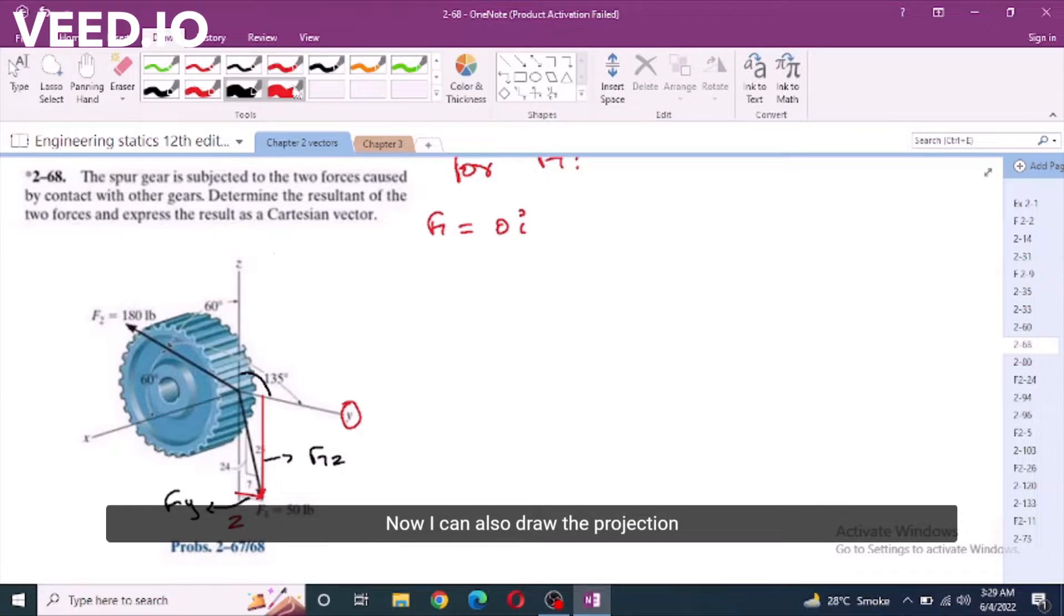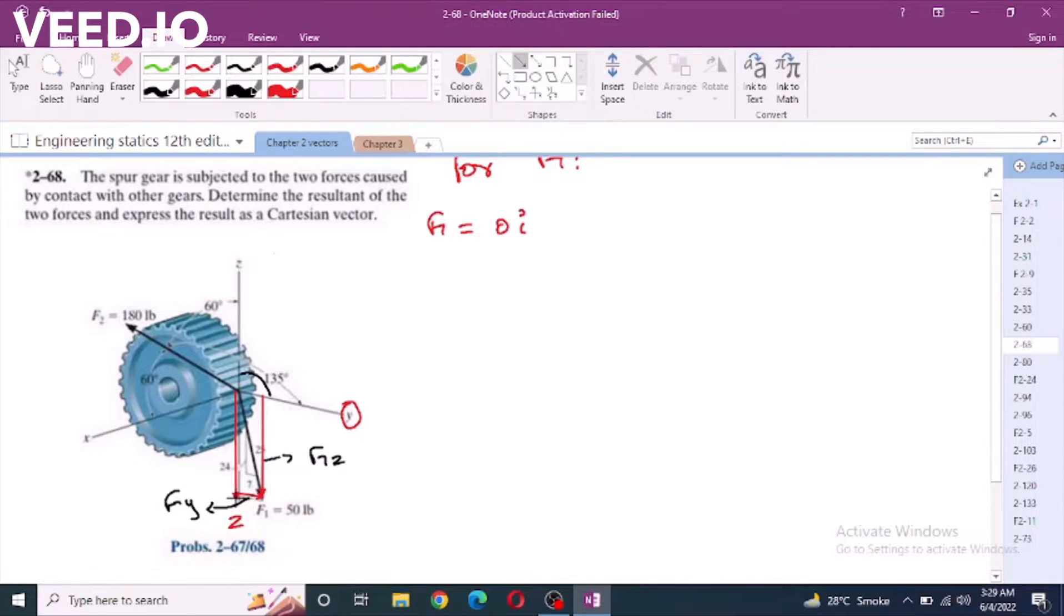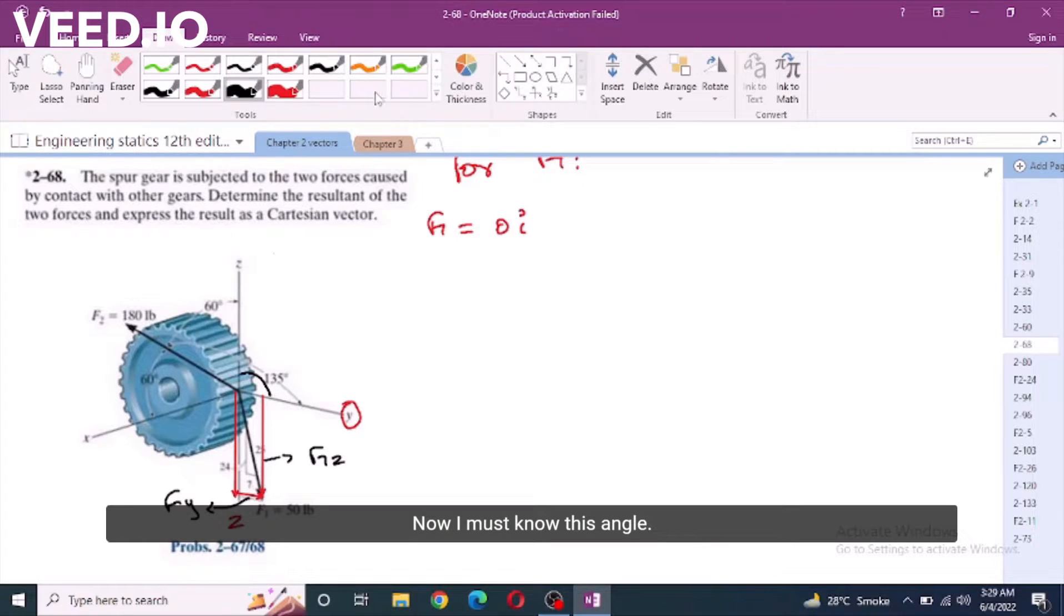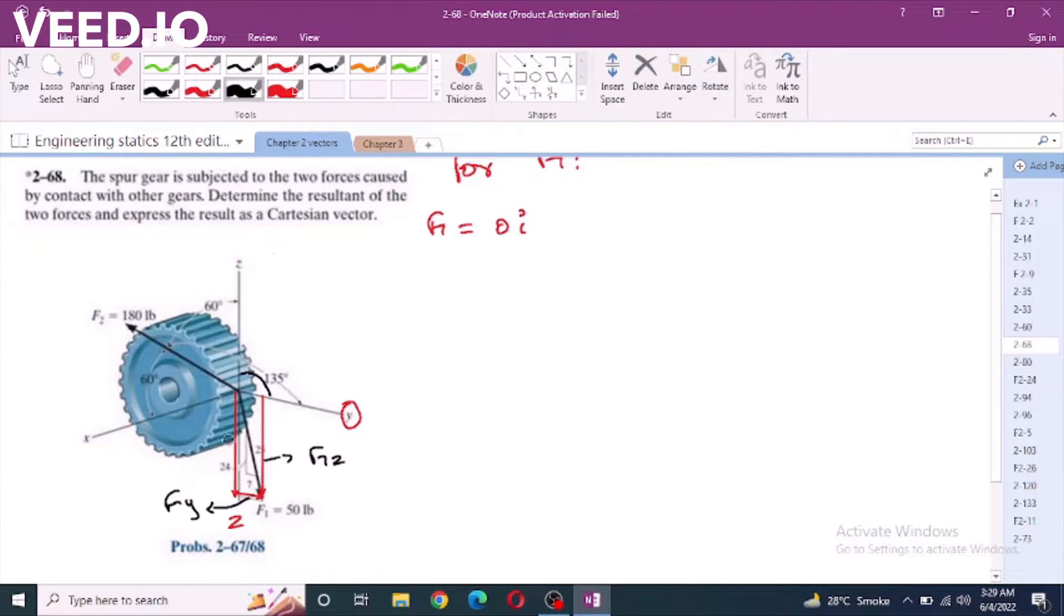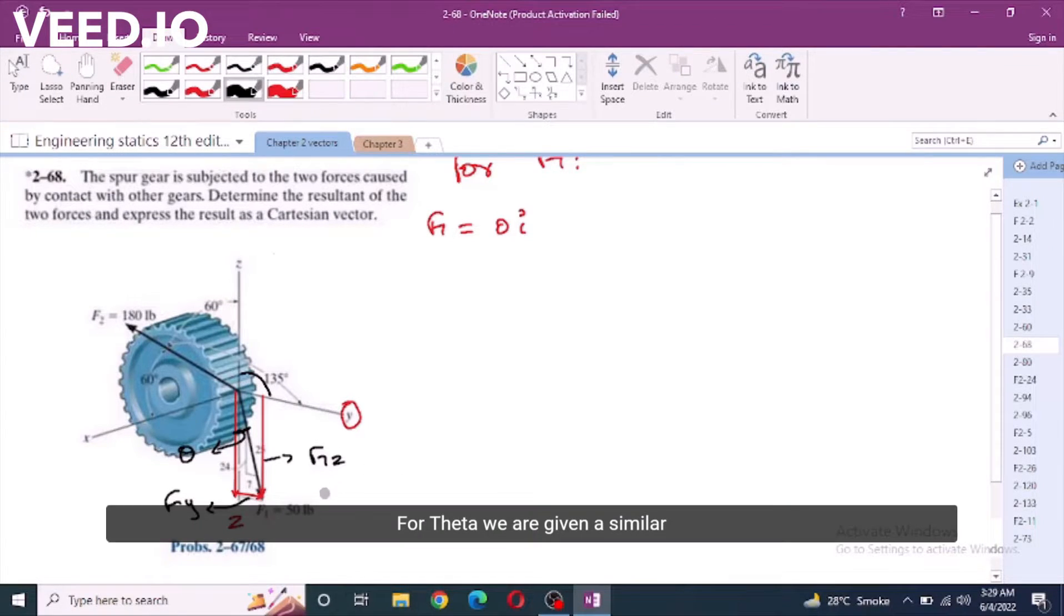Now, I can also draw the projection of f1z component right here. Now, I must know this angle. Let's call this angle theta. For theta, we are given a similar triangle, 7, 24 and 25 triangle.